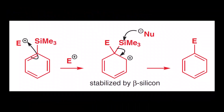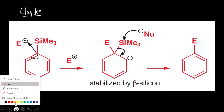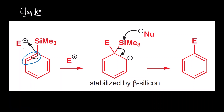Let us try to understand the mechanism of this reaction. This question was taken directly from Claydon — the book written by the author Claydon. So this is the reactant. What exactly happens is: first the electron-rich pi electrons will attack the electron-deficient electrophile, and then a carbocation intermediate is formed. The question is why this carbocation intermediate is stable, and then the nucleophile attacks silicon — we will see that in a moment. The final product is where the SiMe3 substituent is replaced by another electrophile E.